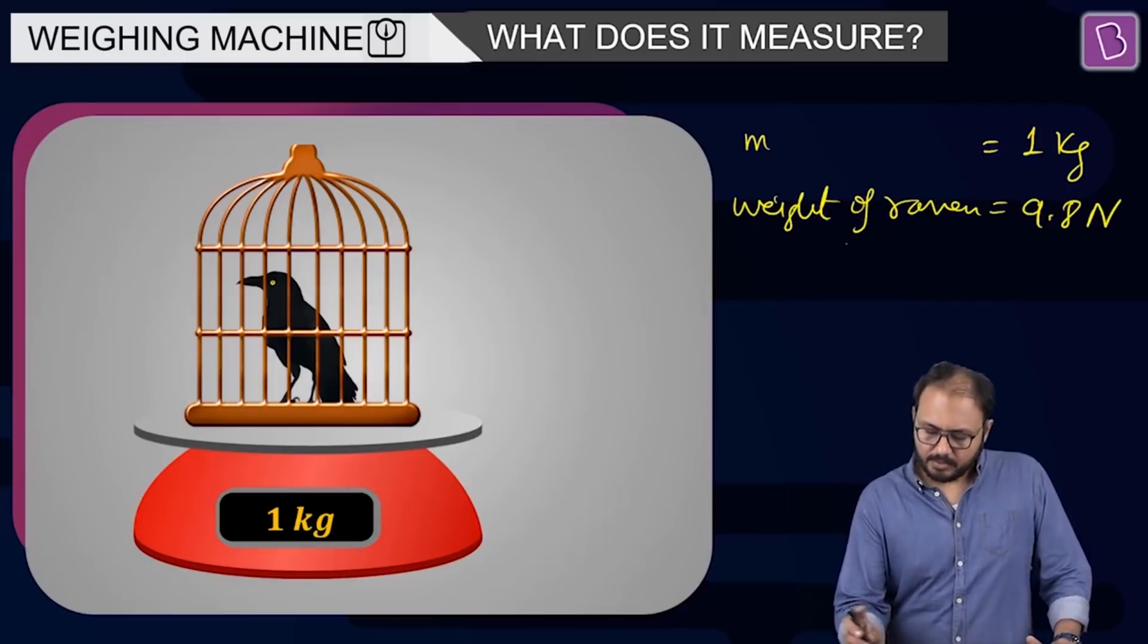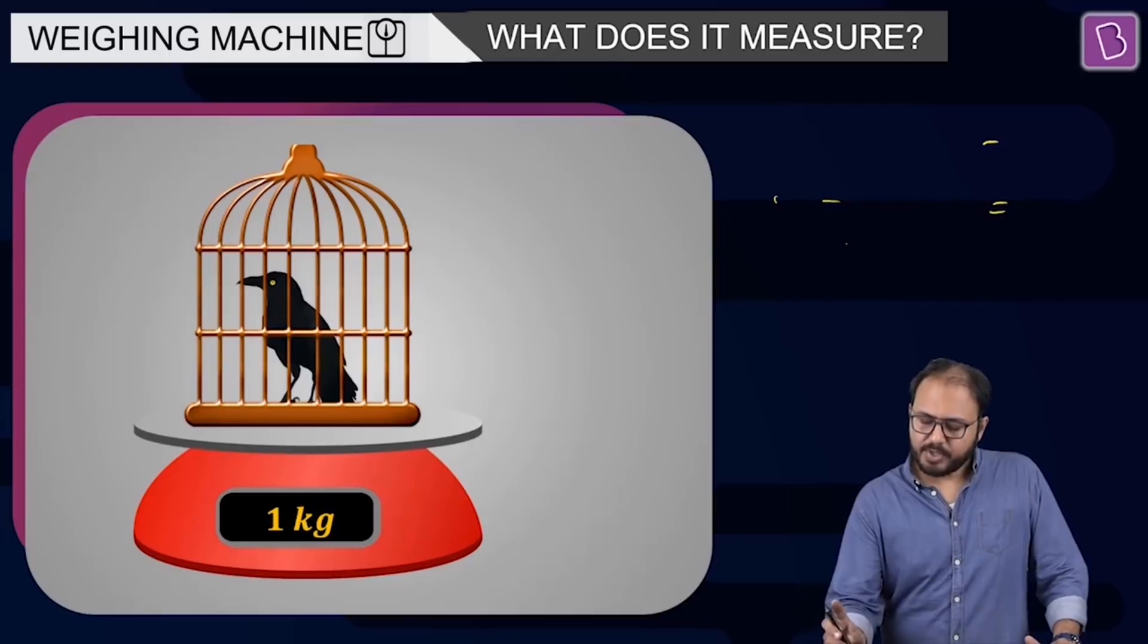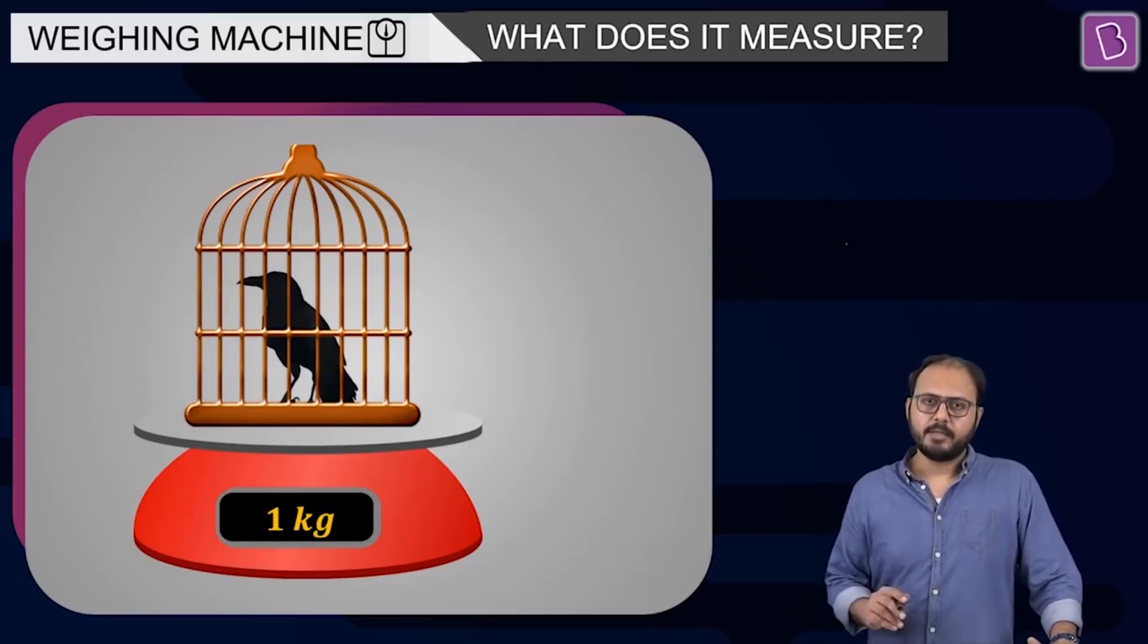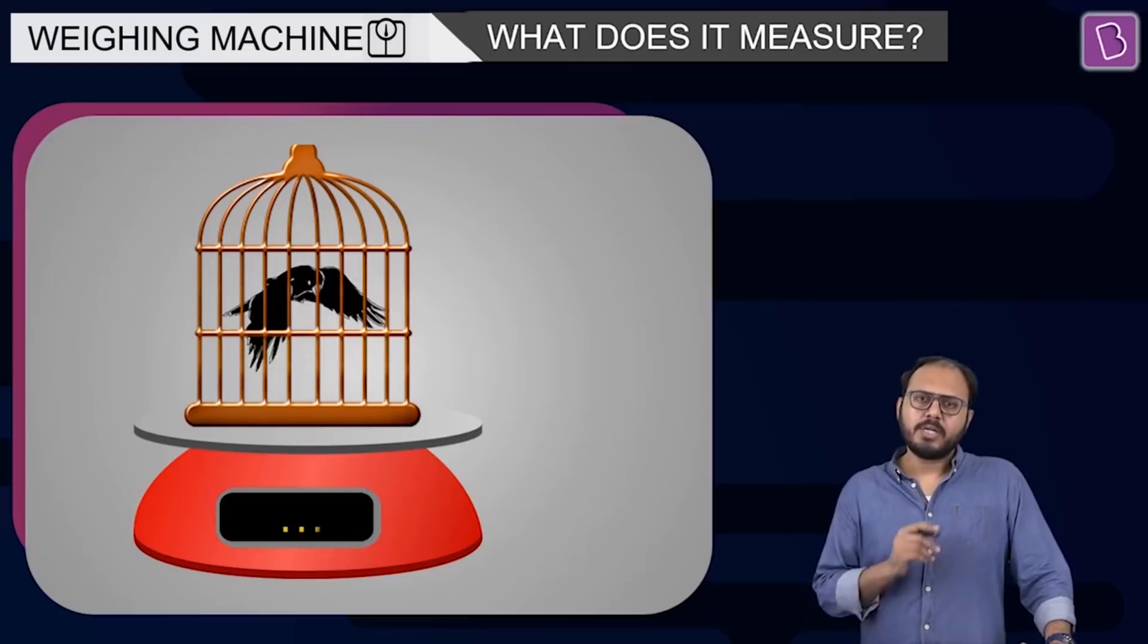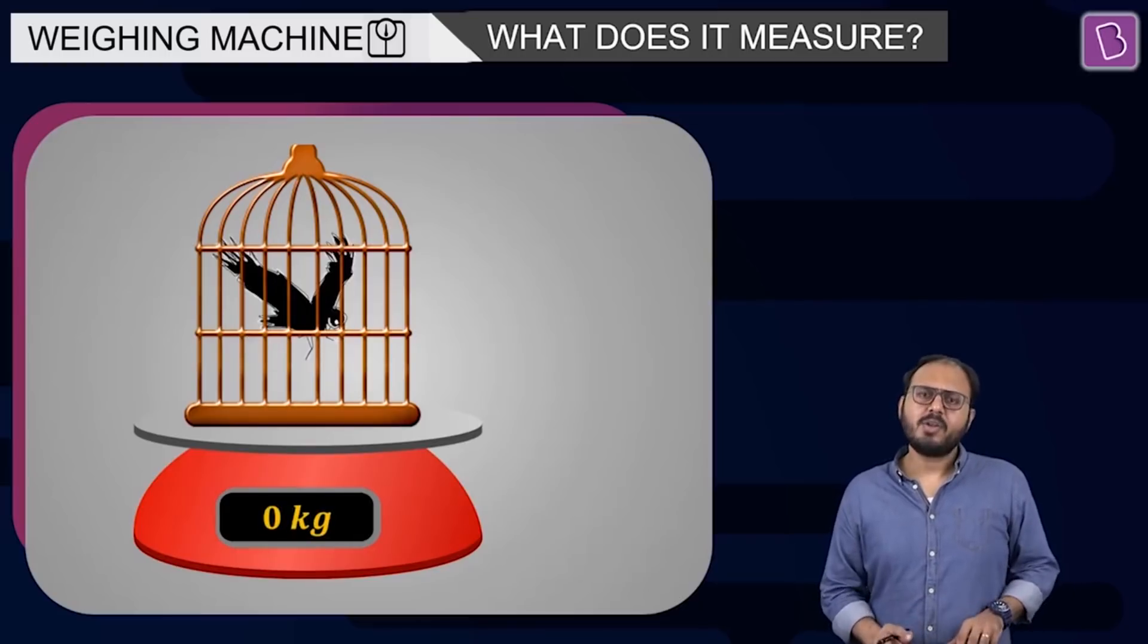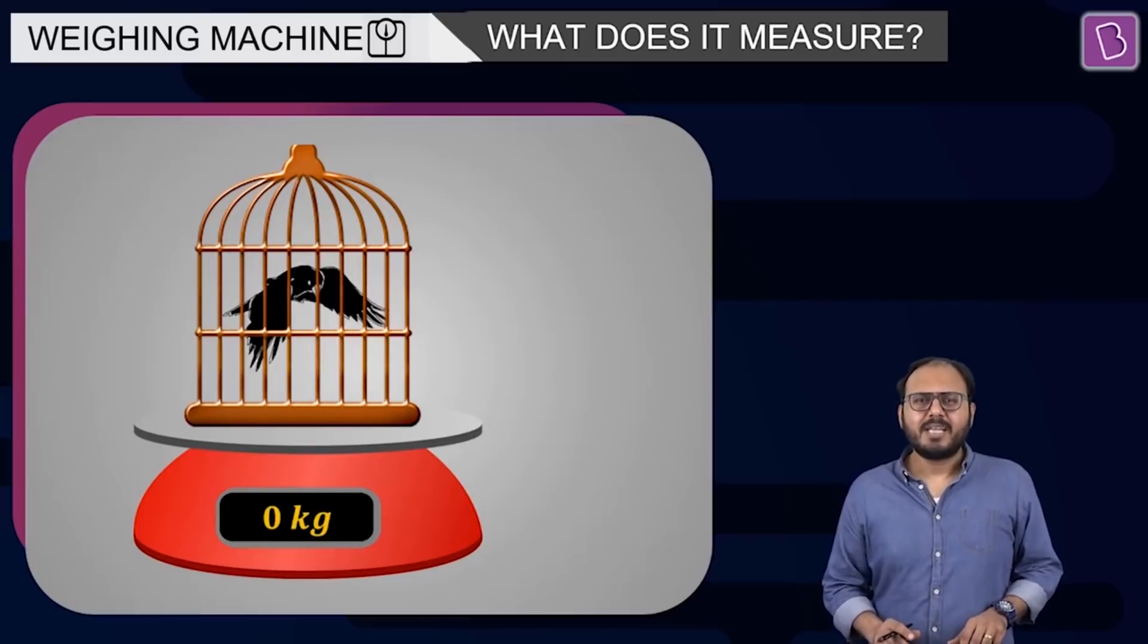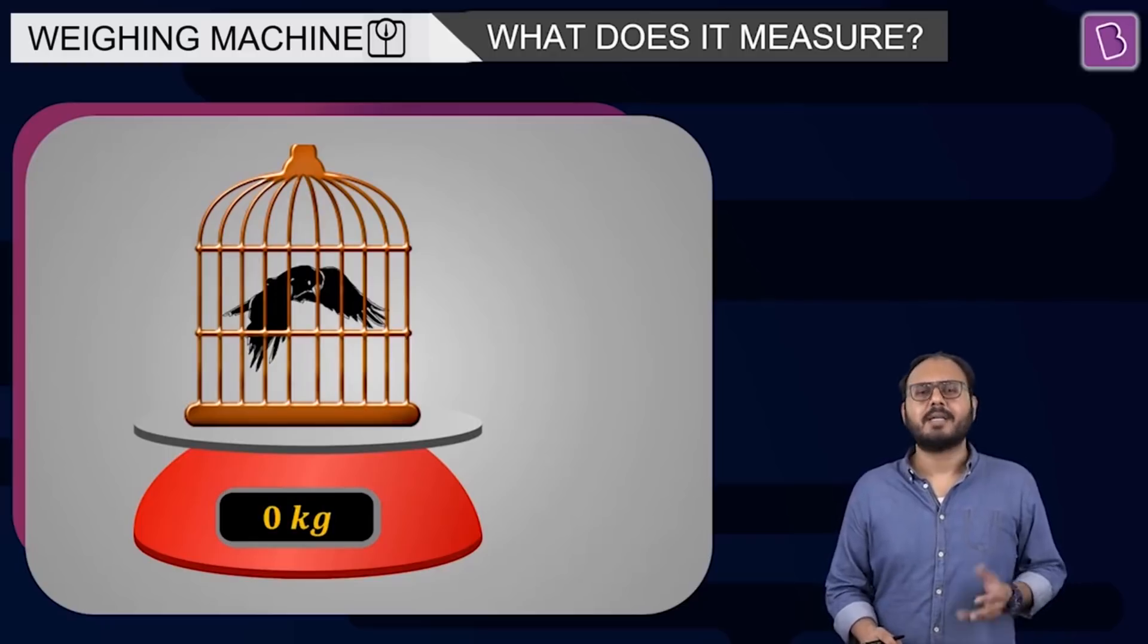Now, my point is, one confusion I already cleared that the birdcage is included in the zero reading. So it's only the raven or the crow talking. Now, the crow is fluttering its wings. Zero kg. Are you telling me the crow's weight is zero kg? No, sir. Come on.